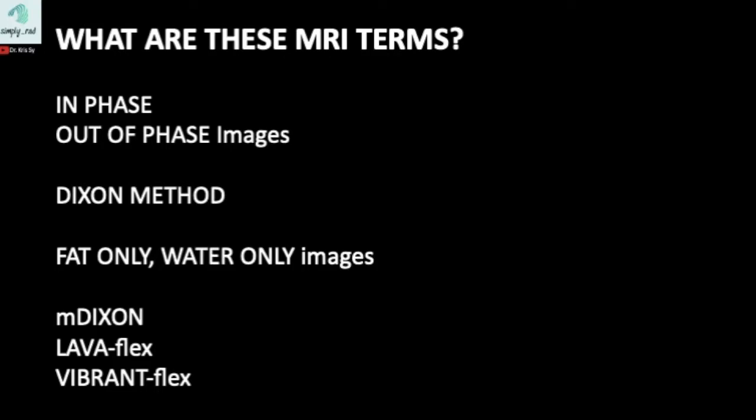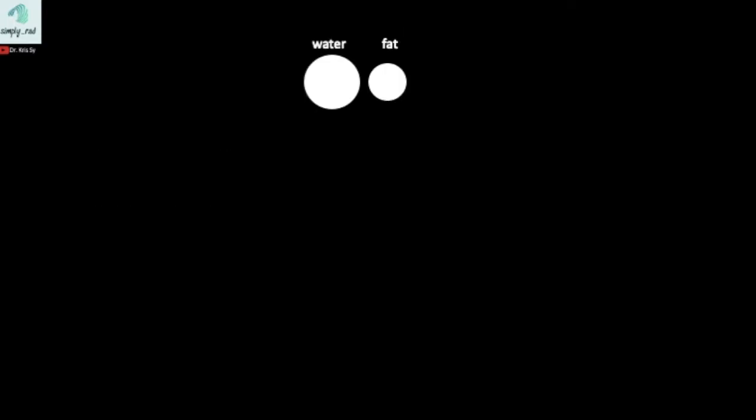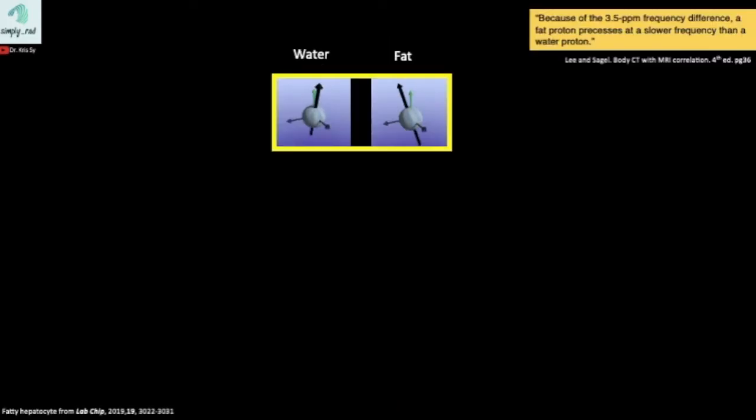First off, the in-phase and out-of-phase images. These circles represent the signals produced by the protons in water and protons in fat. Another way to look at it is imagining these spinning protons. The frequency of their spinning would differ. Fat here is slower than water.